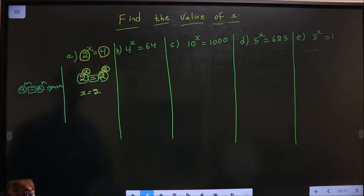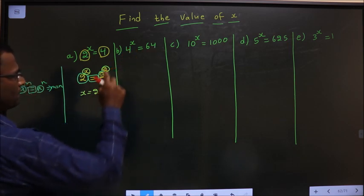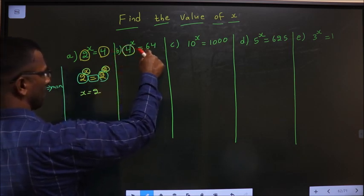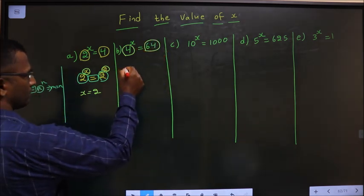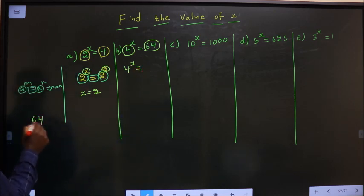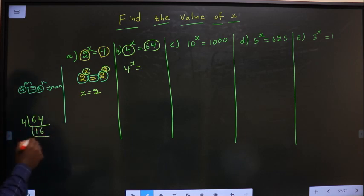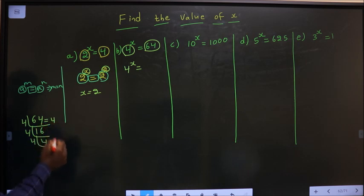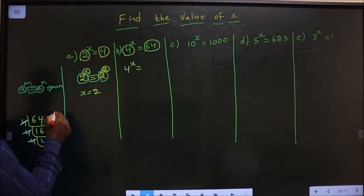Next problem: 4 power x equal to 64. The observation is the base is 4. So write 64 also with the base 4. For that, take the LCM. 64 with base 4: 4 goes into 64 — 4 ones are 4, 4 fours are 16, 4 ones. So 64 is nothing but 4 power 3.